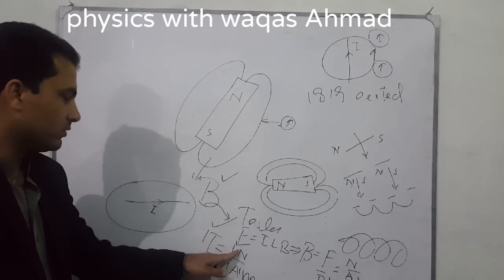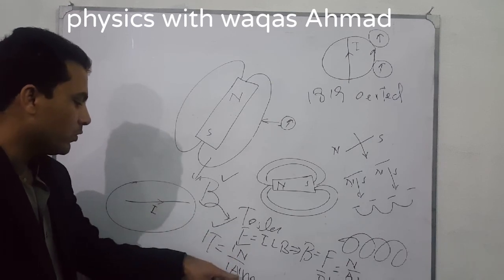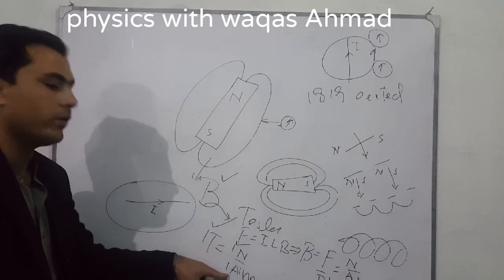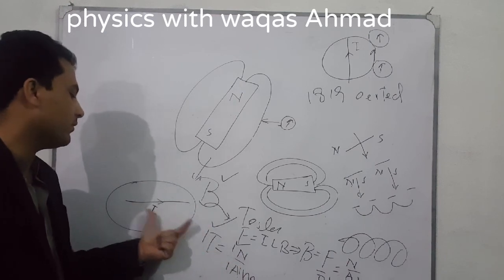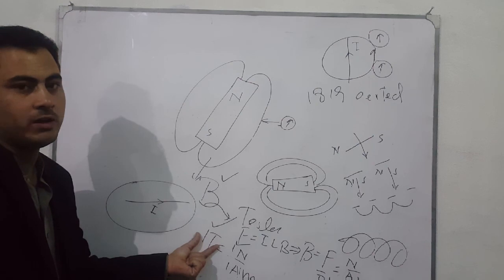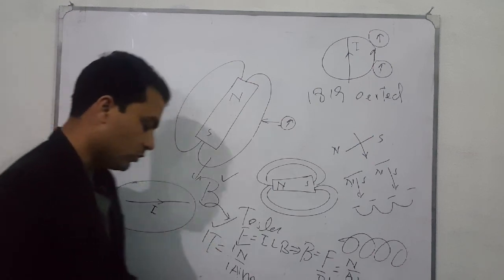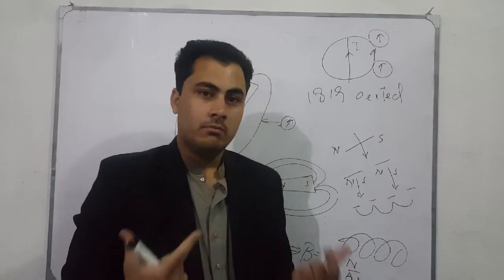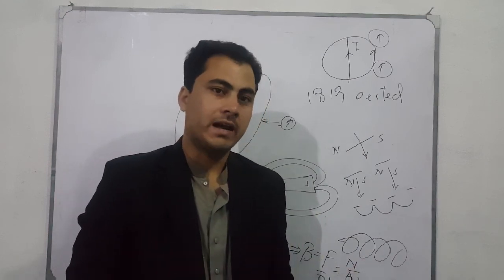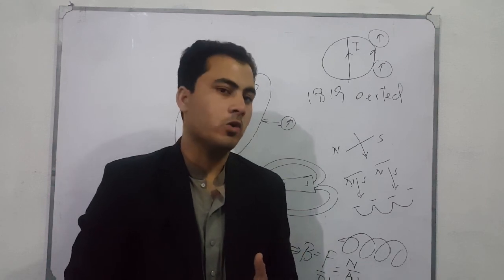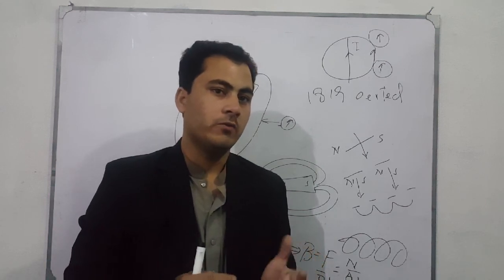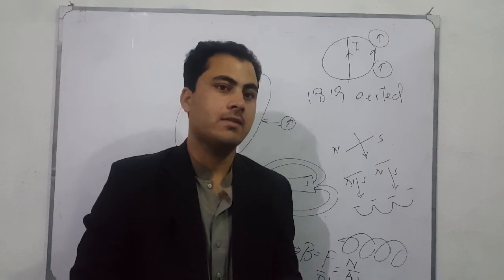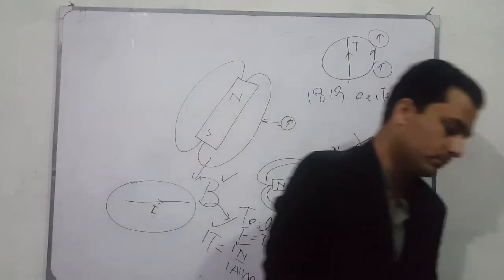One tesla is defined as: if there is one newton of magnetic force on a unit-length wire carrying one ampere of current, then the amount of magnetic induction is said to be one tesla. These are the basic facts about magnetic field, magnet, and a little historical background. I hope you like this video — please subscribe to the channel. Thanks!